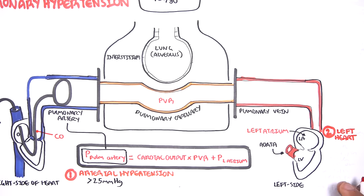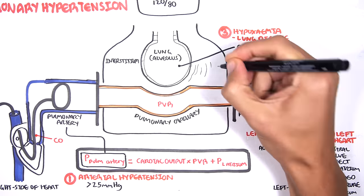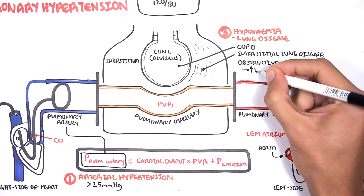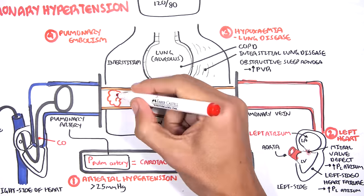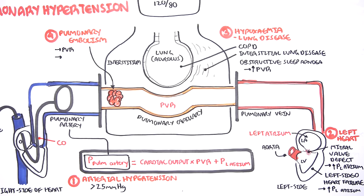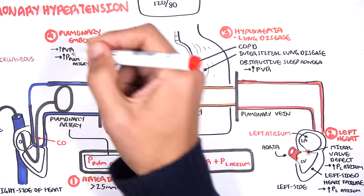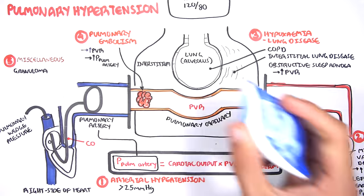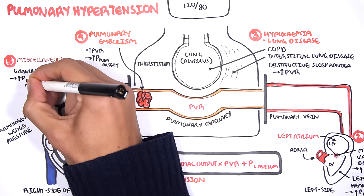Causes of pulmonary hypertension from the left heart include mitral valve disease, which increases left atrial pressure, and left-sided heart failure, which also increases left atrial pressure and so raises pulmonary artery pressure leading to pulmonary hypertension. Hypoxemia due to lung diseases such as COPD, interstitial lung disease, and obstructive sleep apnea can also cause pulmonary hypertension by increasing pulmonary vascular resistance. Pulmonary embolism is another important cause, where occlusion of pulmonary artery branches or capillaries increases pulmonary vascular resistance and thus pulmonary artery pressure. Miscellaneous causes include granulomas from sarcoidosis or connective tissue disease, which cause obstruction and reduce perfusion to the lungs, thereby increasing pulmonary artery pressure.